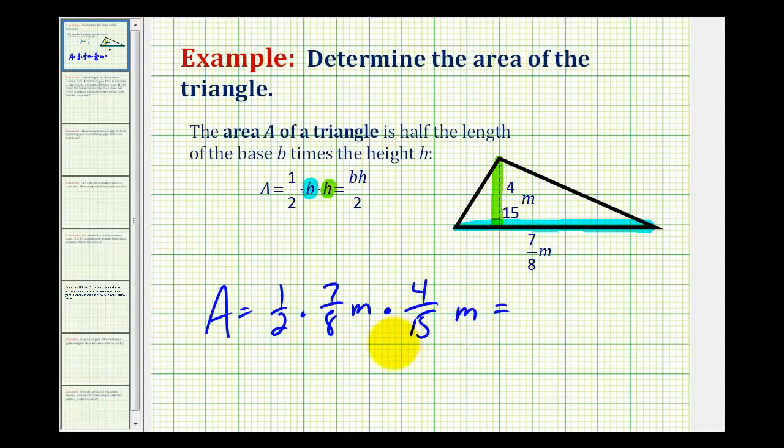Before we multiply, let's see if we can simplify anything. I know that eight is the same as four times two, so this four in the numerator and this four in the denominator simplify to one. Nothing else is going to simplify. Now we'll multiply.